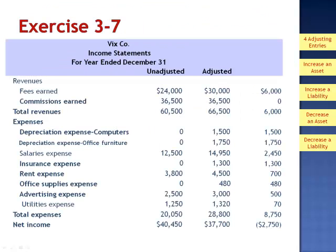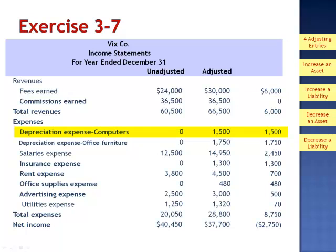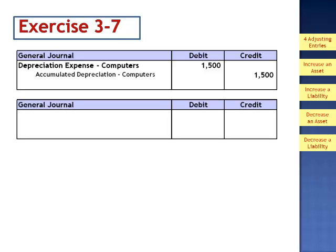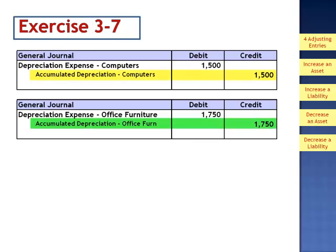Commissions earned was the same on both the unadjusted and adjusted trial balance, so there were no adjusting entries affecting commissions earned. Depreciation expense on computers had an unadjusted balance of zero and an adjusted balance of $1,500. Similarly, depreciation expense on office furniture increased from zero to $1,750, so there must have been two depreciation adjusting entries. The first: debit depreciation expense on computers for $1,500, credit accumulated depreciation on computers. The second: debit depreciation expense on office furniture for $1,750, credit accumulated depreciation on office furniture. Notice there's a separate accumulated depreciation account for each depreciable asset.